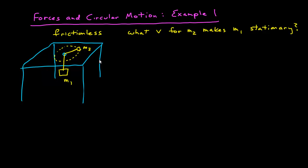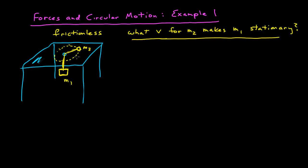In this video, I'm going to do an example utilizing forces in circular motion. I have a table set up, and the surface of my table is frictionless. Mass 2 is moving in a circle around a hole in the table. A string is attached to mass 2, which follows radially to that hole, drops down below the table, and is attached to mass 1. The question is: what is the speed for mass 2 such that mass 1 is stationary? If mass 2 is just at rest, mass 1 will fall and mass 2 will go toward the hole. But assuming mass 2 is moving in circular motion, what speed could it have such that mass 1 is motionless?